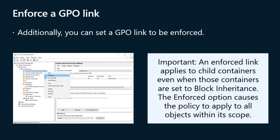You can set a GPO link to be enforced. To enforce a GPO link, right-click the GPO link in the console tree and then select Enforced from the shortcut menu. When you set a GPO link to Enforced, the GPO takes the highest level of precedence. Policy settings in the GPO prevail over any conflicting policy settings in other GPOs. An enforced link applies to child containers even when those containers are set to Block Inheritance. Enforcement is useful when you must configure a GPO that defines a configuration mandated by your corporate IT security and usage policies.